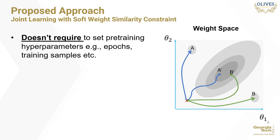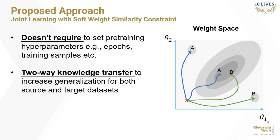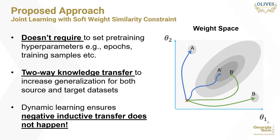This achieves three benefits. Firstly, one doesn't have to set the pre-training epochs, learning rate, and other pre-training hyperparameters. Instead, the network can dynamically learn to use only the information useful to a specific task from the other dataset. Secondly, pre-training and fine-tuning is a one-way scheme where only one task benefits from the other, but in our proposed scheme, both networks simultaneously learn from each other to improve generalization — especially useful for seismic inversion where even the source dataset contains only a limited number of wells, unlike ImageNet with millions of labeled samples. Thirdly, the soft constraint ensures that even in the worst case where the two datasets are very different, the networks can fall back to learning only from their respective dataset, and there is no negative inductive transfer of knowledge.